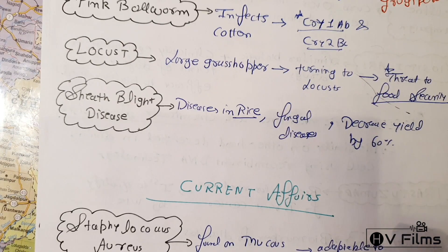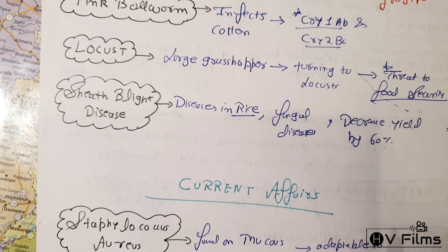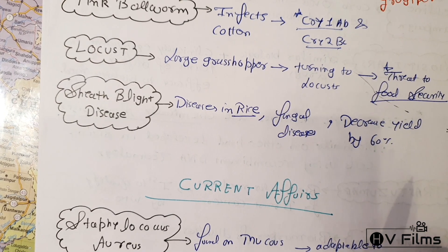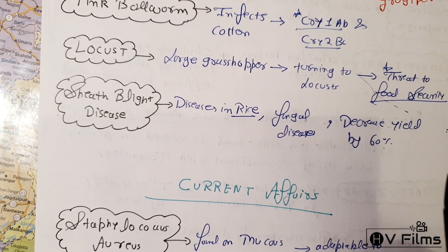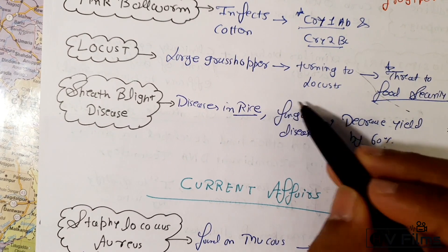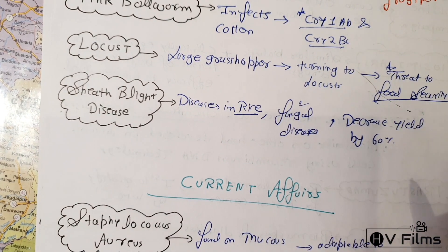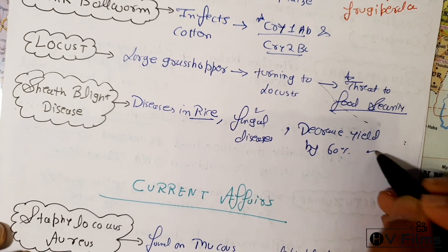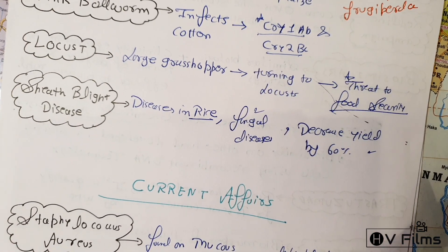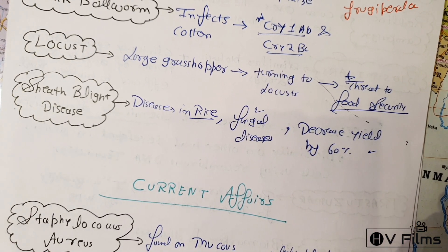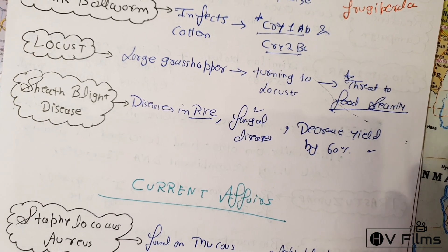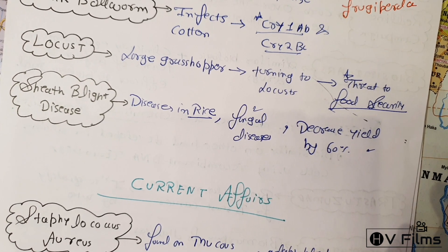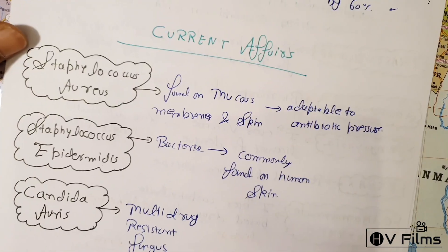Sheath blight disease is a fungal disease in rice that causes a decrease in yield by up to 60 percent.